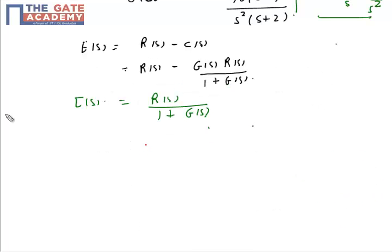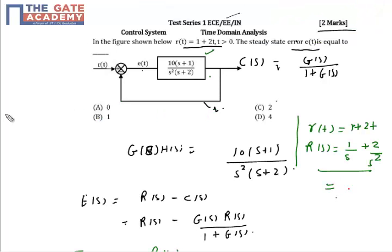Just put the value of R(s) here. You can take the LCM, you will get s plus 2 upon s square.